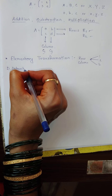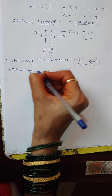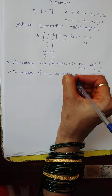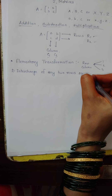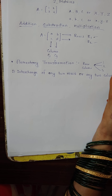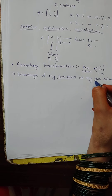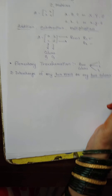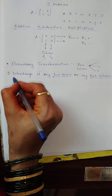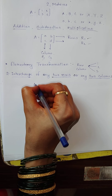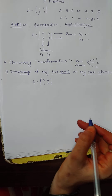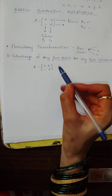The first type is interchange of any two rows or any two columns. For example, this is the matrix with elements A, B, C, D. We can change using the interchange — the changes between two rows, or interchange of any two columns. We can change the elements by interchanging.